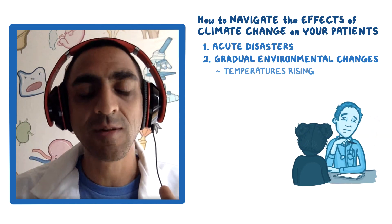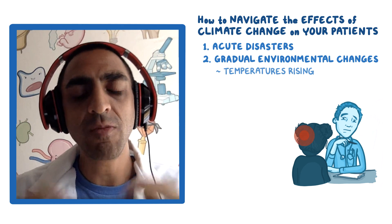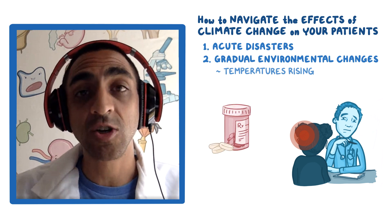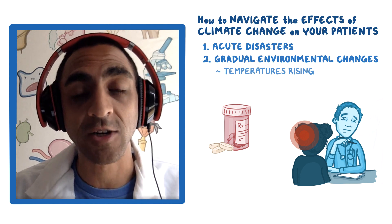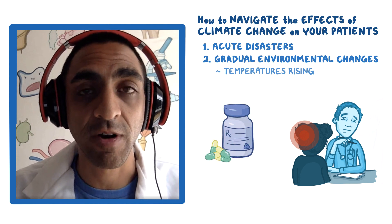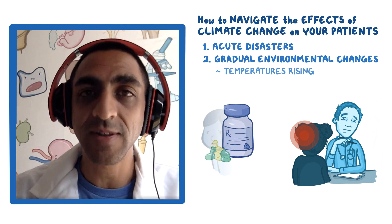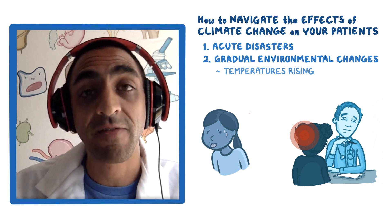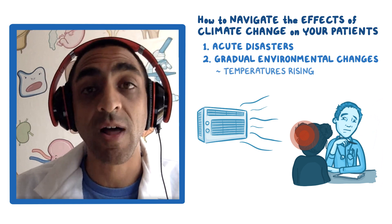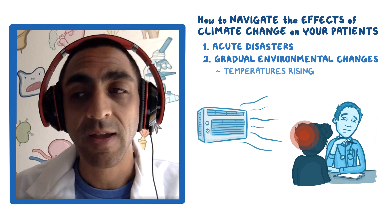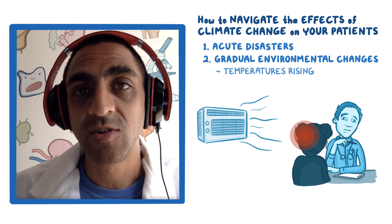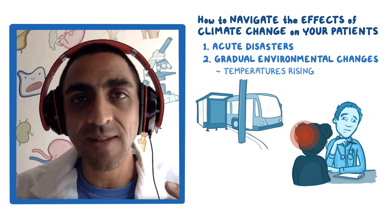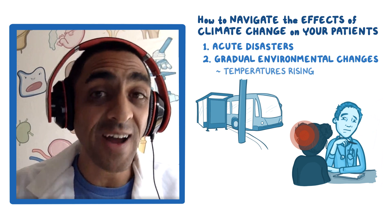If someone comes in with a headache, you might be tempted to think it's a migraine or a stress headache and give them certain medications. But you might be missing the boat — if it's heat-related and they're having heat stroke, they need a completely different set of interventions. Maybe they need air conditioning because they're not well off and can't afford it, and you may need to work with a social worker to accommodate that.